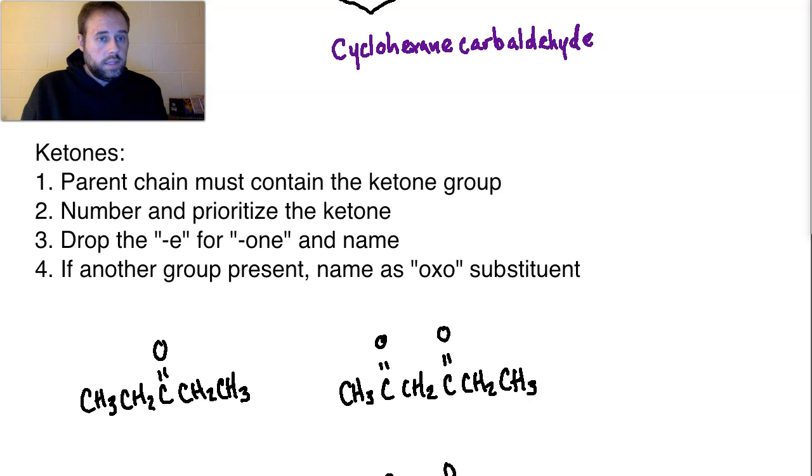So when we do ketones, some of the same general rules apply. Number one, the parent chain must contain the ketone group. So wherever that ketone may lie, it has to be included in the main parent chain. I can't ignore the ketone or have it off to the side and not count it in the chain. Number two, number and prioritize the ketone. That's similar to everything else that we've been doing. We just saw examples of that with aldehyde. Number three, drop the e and add one to the name. So now instead of al, we're going to be using one for ketone.